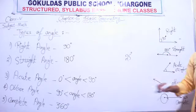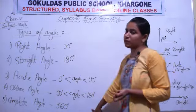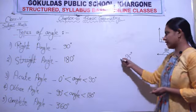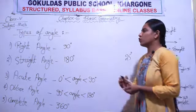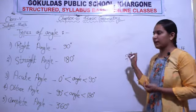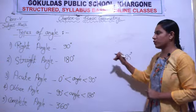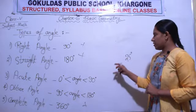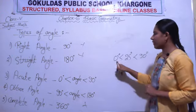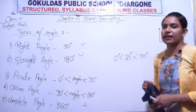Now if I write 25 degrees — identify whether it is a right, straight, acute, obtuse, or complete angle. To be a complete angle it must be 360 degrees — not 25. To be a right angle it must be 90 degrees — not 25. To be a straight angle it must be 180 degrees — not 25. Now check: 25 is greater than 0 degrees and less than 90 degrees, so 25 degrees is an acute angle.